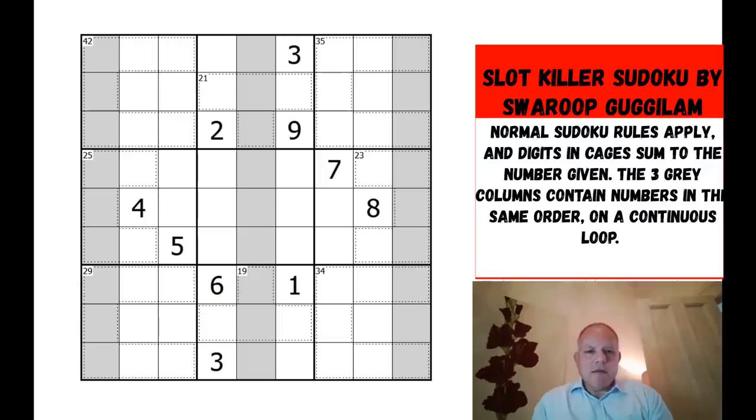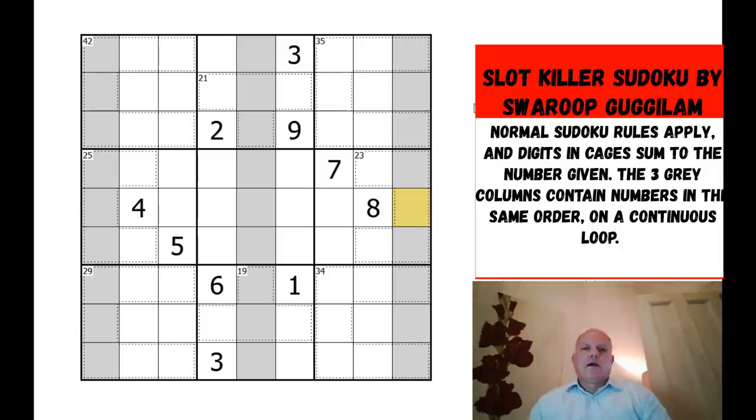The rules are we've got some killer cages which, as normal, you add up the numbers in the cage to get the number given in the corner. Normal Sudoku rules apply as usual. There are these three gray strips which work like a slot machine in that the same numbers in the same order go down them, but not always starting from the same point so they cycle around the grid. So if this one went 1, 2, 3, 4, 5, 6, 7, 8, 9, this one might go starting again at the top. I don't know for sure that real slot machines work like that, but I'll take Swaroop's word for it.